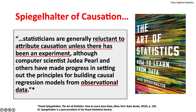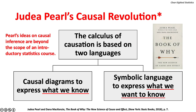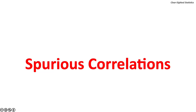David Spiegelhalter, past president of the Royal Statistics Society, notes that statisticians are generally reluctant to attribute causation unless there has been an experiment, although computer scientists Judea Pearl and others have made progress in setting out principles of building causal regression models from observational data. In The Book of Why, Judea Pearl and Dana McKenzie developed a calculus of causation based on two languages: causal diagrams to express what we know, and symbolic language to express what we want to know.